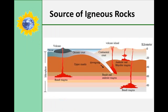Magma is a molten mass that comprises the most abundant elements on Earth, such as silicon, aluminum, iron, calcium, magnesium, potassium, hydrogen, and oxygen, where silicate, or SiO2, is the most abundant of all. The temperature of magma is between 1,040 to 1,200 degrees Celsius.